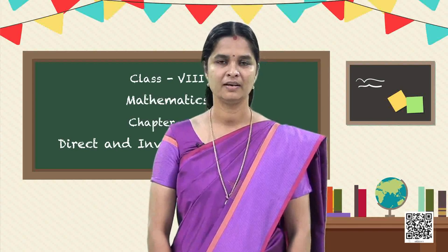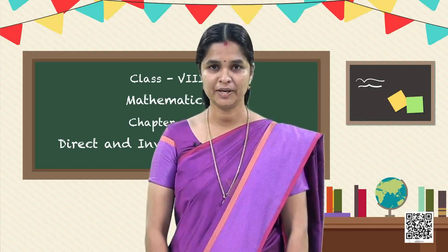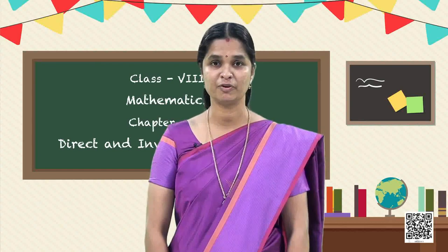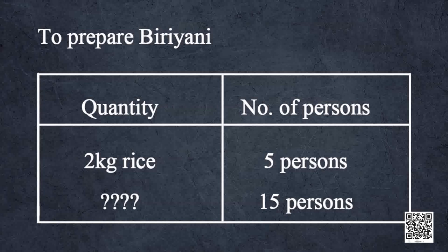We know that as the number of persons increases, we have to take more quantity of all these items. That means when one quantity increases, the other quantity also increases — both the quantities increase or decrease together. For example, Kalam needs two kg of rice to prepare biryani for five persons. As the number of people increases, we have to take more quantity of rice. Both quantities increase or decrease together.